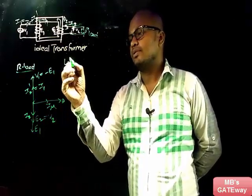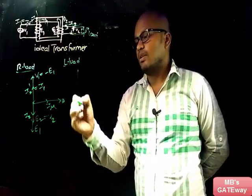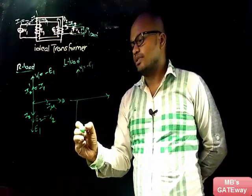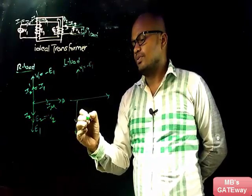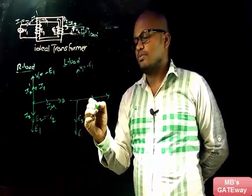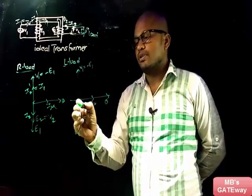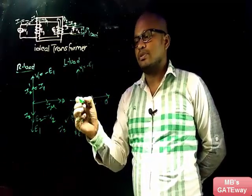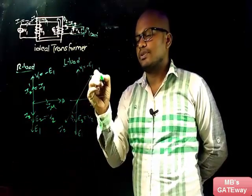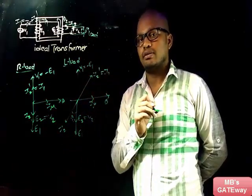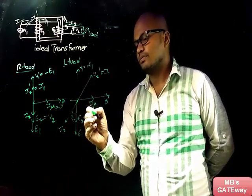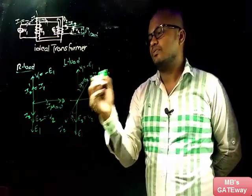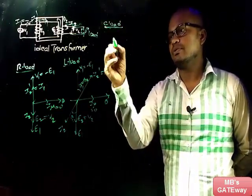Now let's see the phasor diagram for inductive load. V1 equals minus E1, E2 equals V2, and Iμ and flux phi are shown. For inductive load, current I2 lags V2 by angle phi2. The opposite direction gives I2', which equals I1. Notably, Iμ equals zero, and phi1 equals phi2.